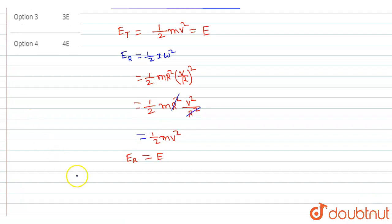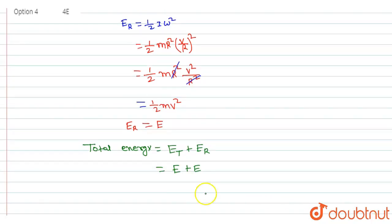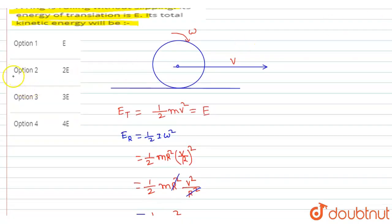Therefore, total kinetic energy = translational energy + rotational energy = E + E = 2E. So the total kinetic energy is 2E. According to the options, the second option is the correct answer.